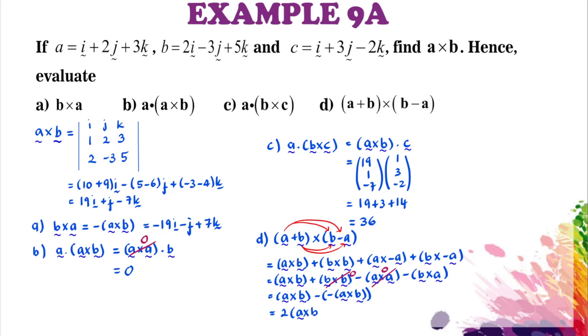So simplified we're going to have twice A cross B, so we just have 2 times the vector of A cross B, so we end up with 38i plus 2j minus 14k.